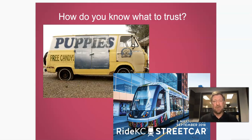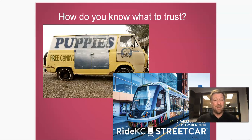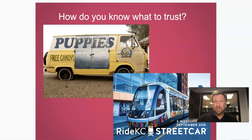So let's say that you have to take a ride somewhere. You need to get from point A to point B, and you have a couple choices in front of you. There's the puppy van with free candy and a clown, or there's the Kansas City streetcar, which is new and shiny and takes a lot of people to a lot of places. Obviously, I'm hoping that you're looking with a little suspicion at that clown car, at the rundown van.